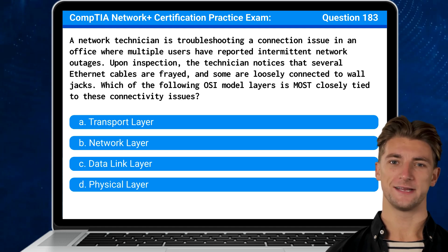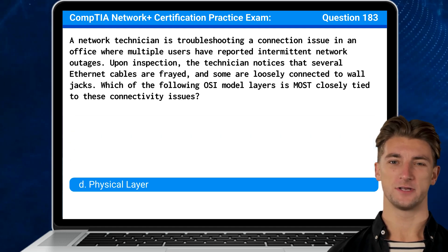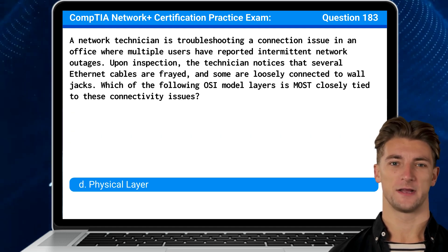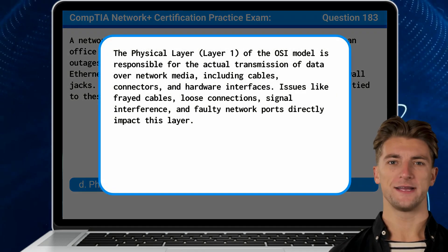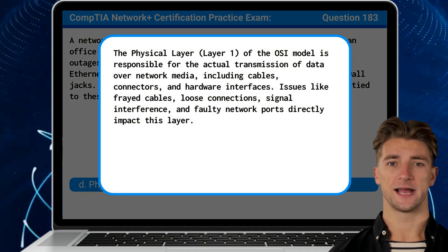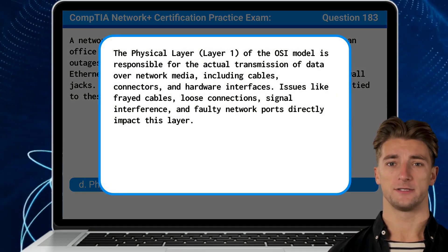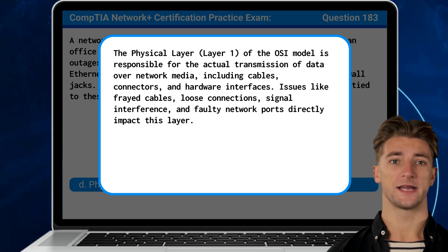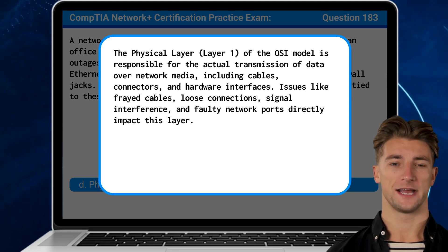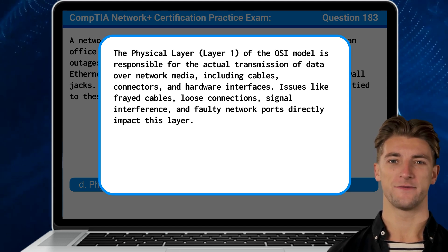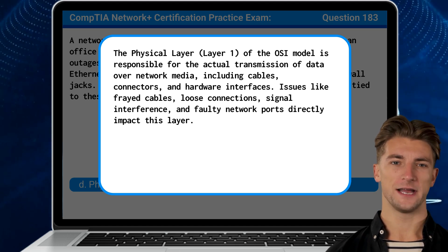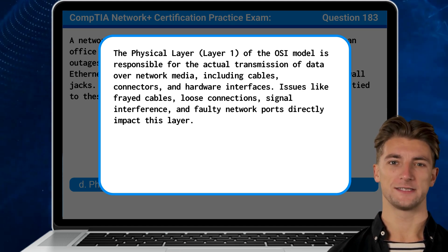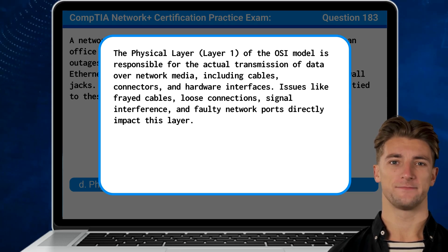The answer is D: Physical layer. The physical layer, Layer 1 of the OSI model, is responsible for the actual transmission of data over network media, including cables, connectors, and hardware interfaces. Issues like frayed cables, loose connections, signal interference, and faulty network ports directly impact this layer.